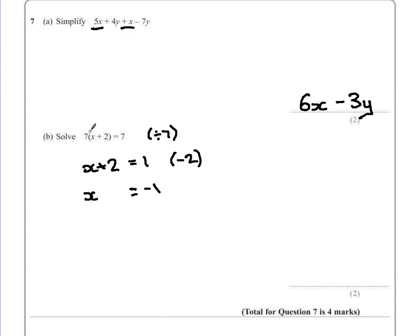Does that work? 7 times, minus 1 add 2, well 7 times 1 is 7, so therefore we have the correct answer of x is equal to negative 1.